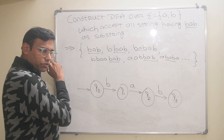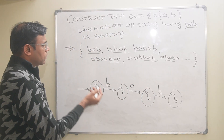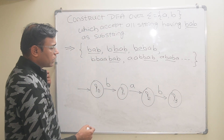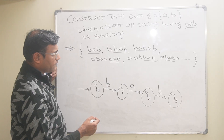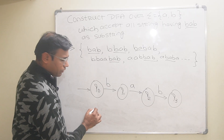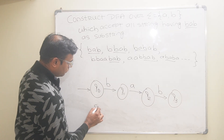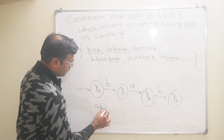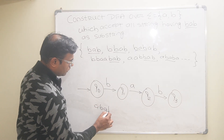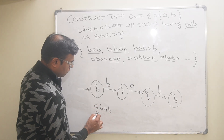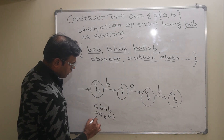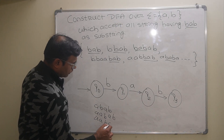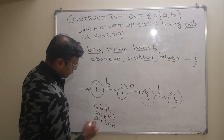The string can start with A, so it can be A, AB, ABA, ABAB and so on. It can also have double B — like BBAB, BBBAB — prefixed before BAB.